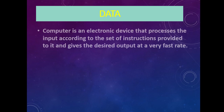What is data? The computer is an electronic device that processes the input according to a set of instructions and gives the desired output. It takes input from the outside world, processes it — meaning performing calculations, manipulations, or executing operations — based on the instructions you give. The final result is called output. An instruction is nothing but a command — telling the computer what kind of operation to perform.